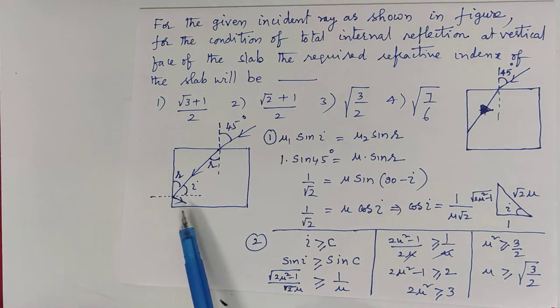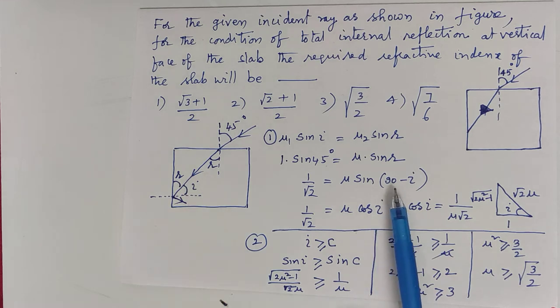From this diagram, r plus i equals 90. So r equals 90 minus i. sin(90 - i) is cos i, that equals 1/(√2μ).